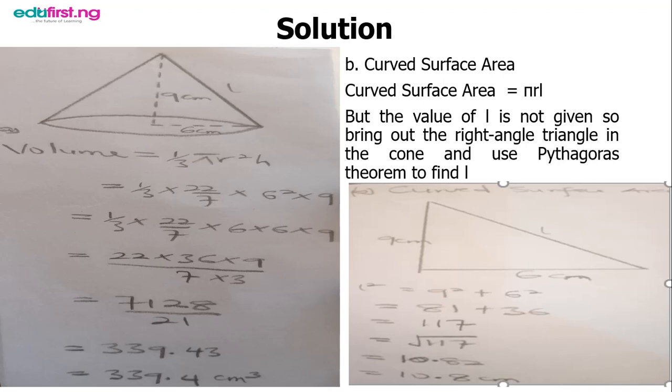Don't forget we're not looking for l², we're looking for l, so we take the square root. The square root of 117 is 10.82, or 10.8 centimeters if you want to leave it as one decimal point.